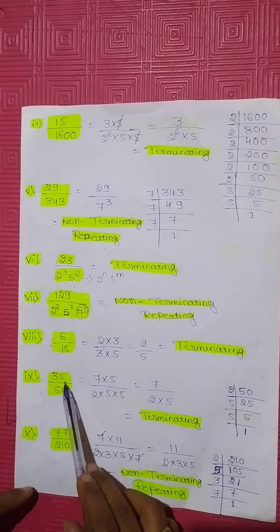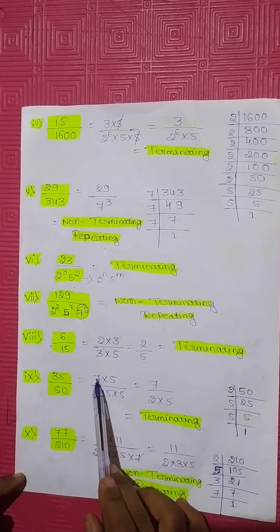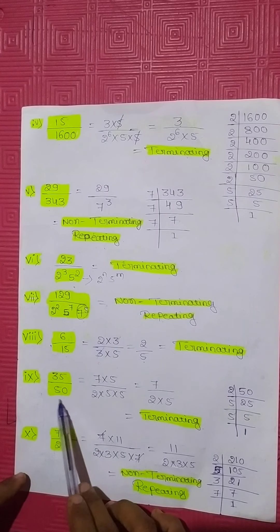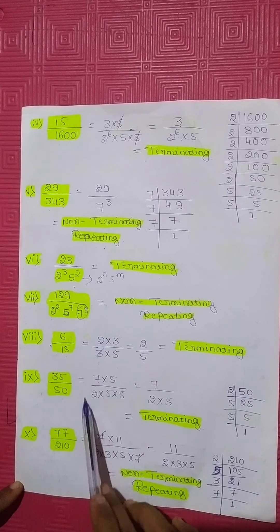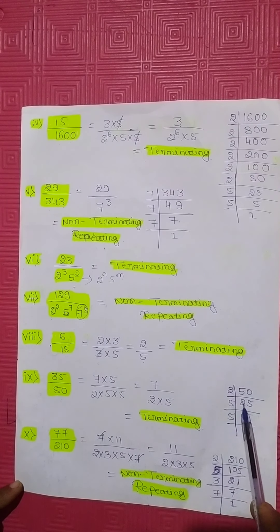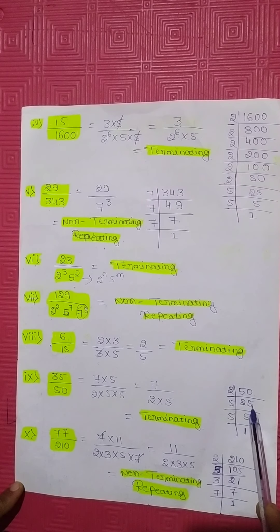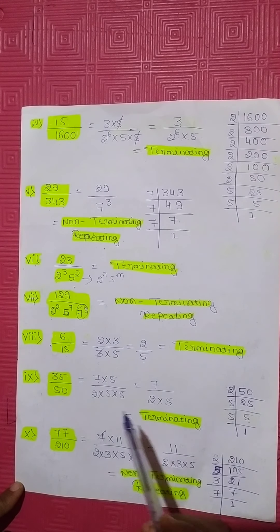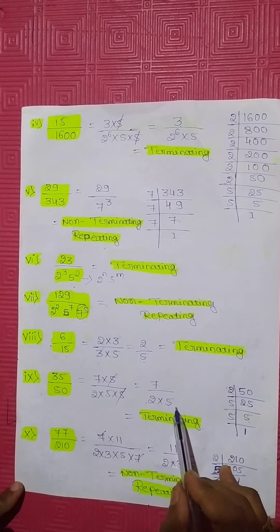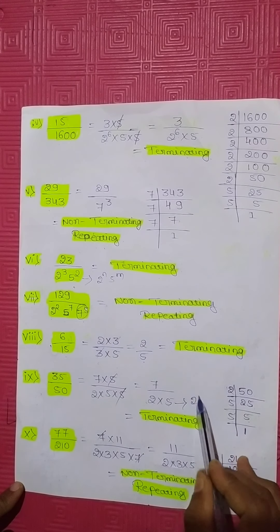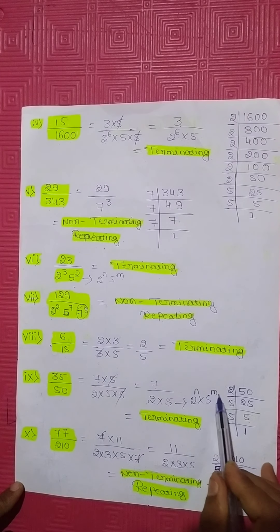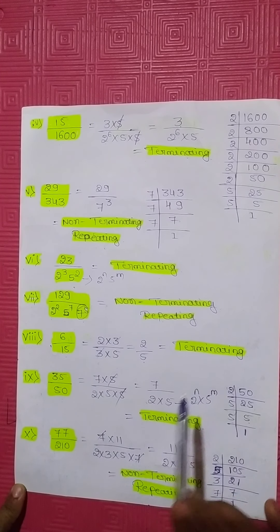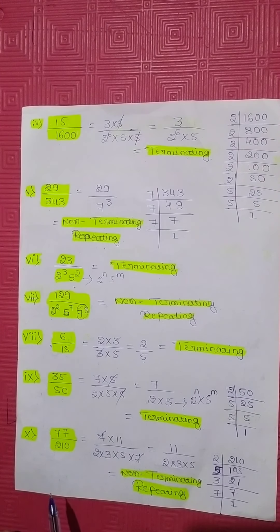Ninth question: 35 divided by 50. 35 can be written as 7 into 5. 50 in prime factorization is 2 into 5 into 5. The 5 cancels, giving 7 divided by 2 into 5. The denominator contains 2 to the power of N and 5 to the power of M form, therefore this is a terminating decimal.